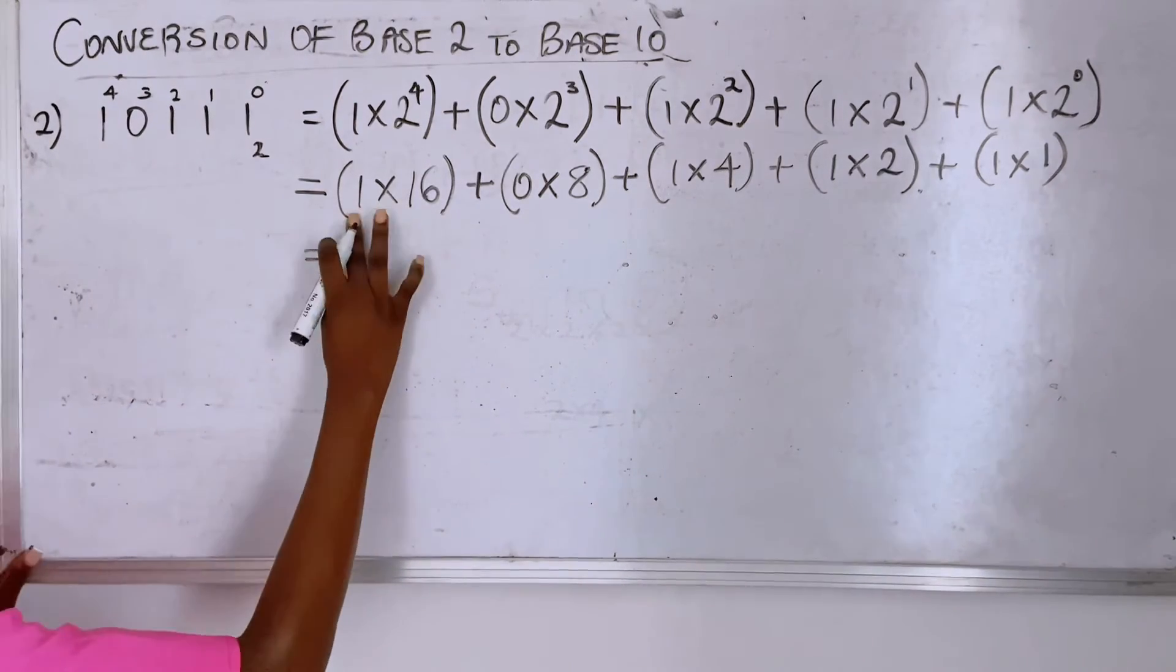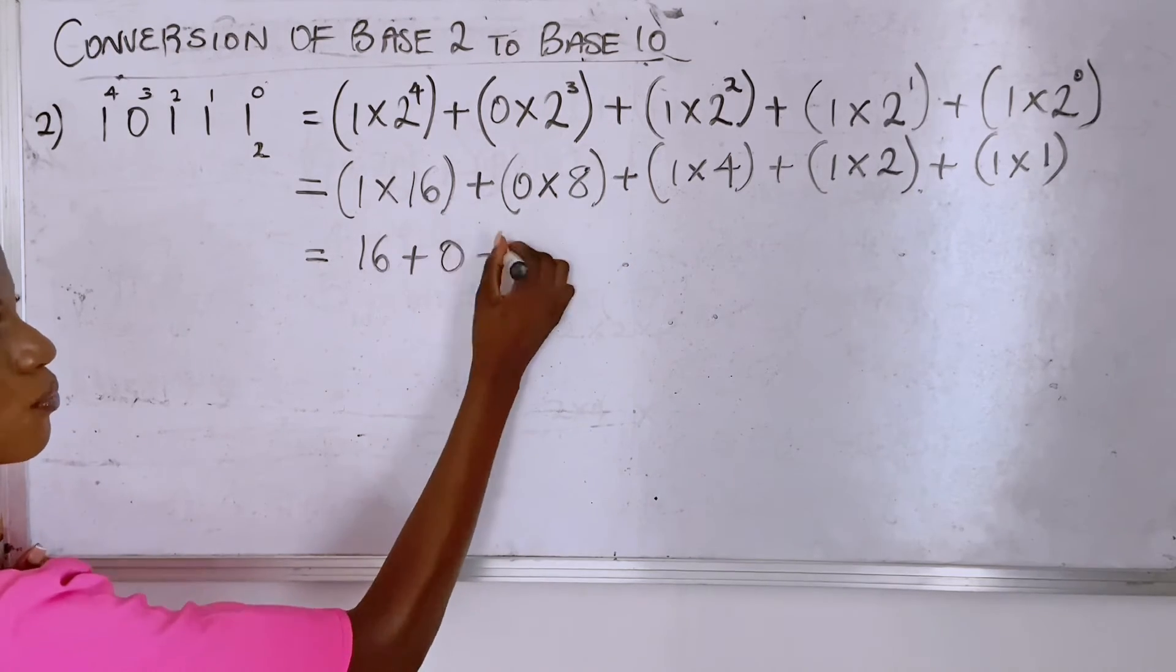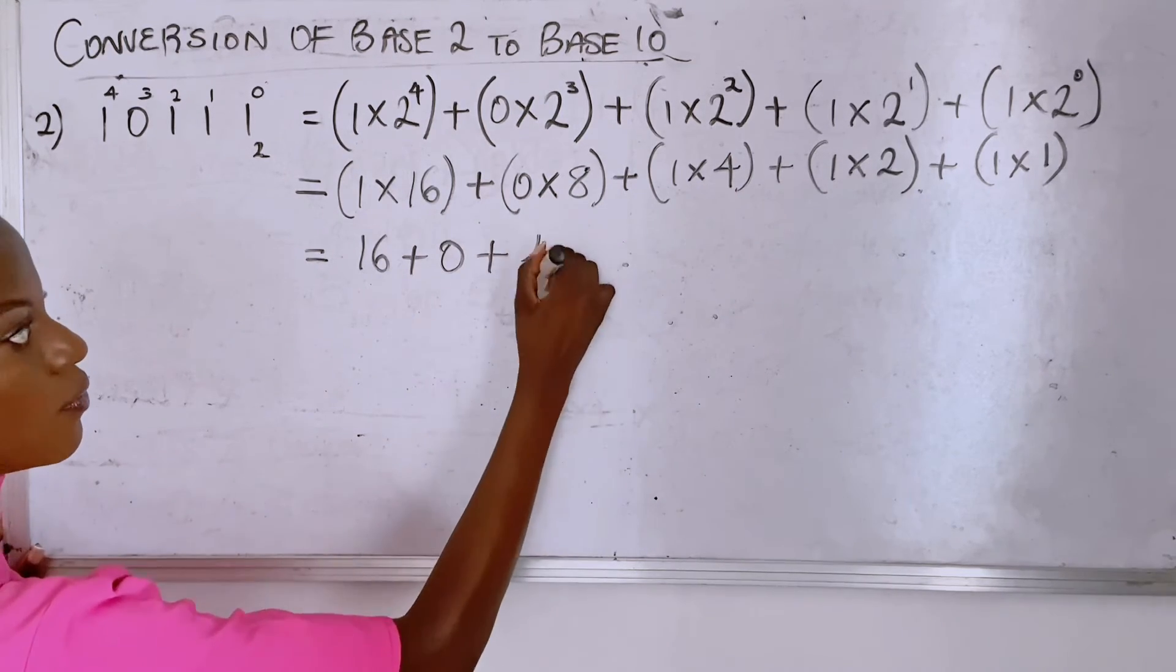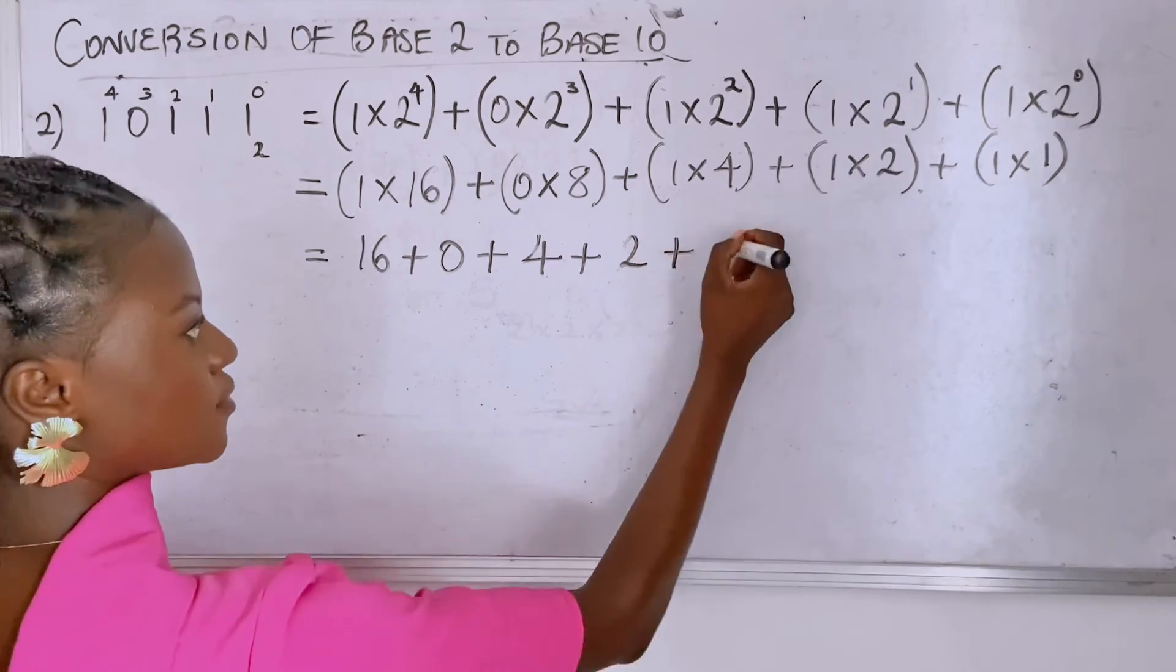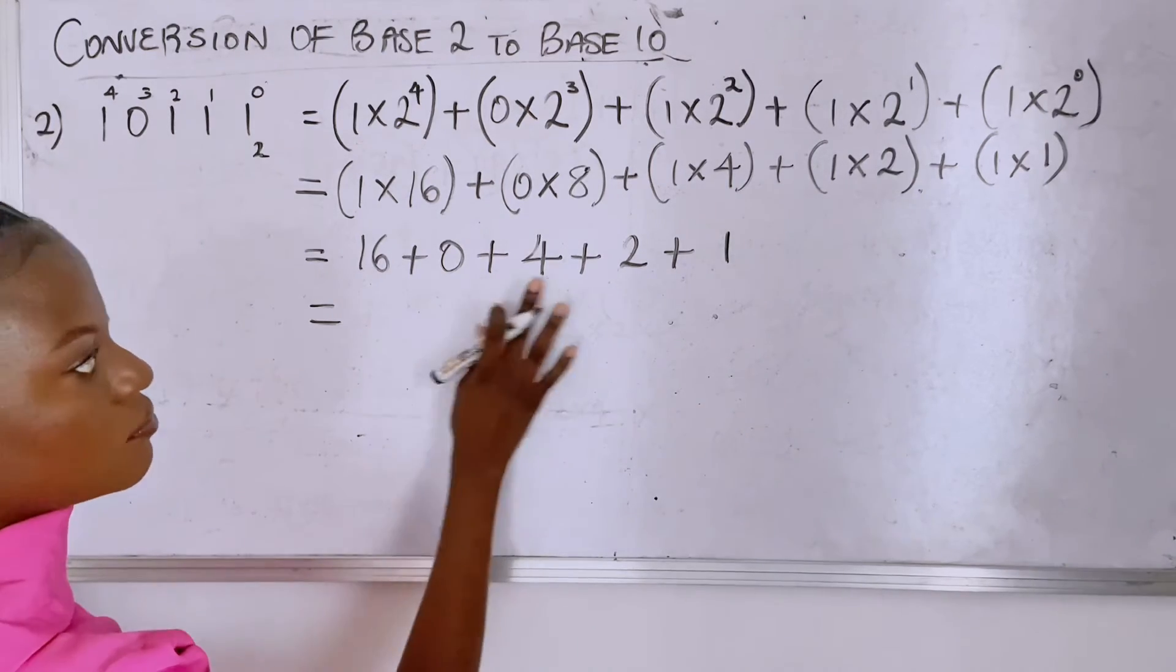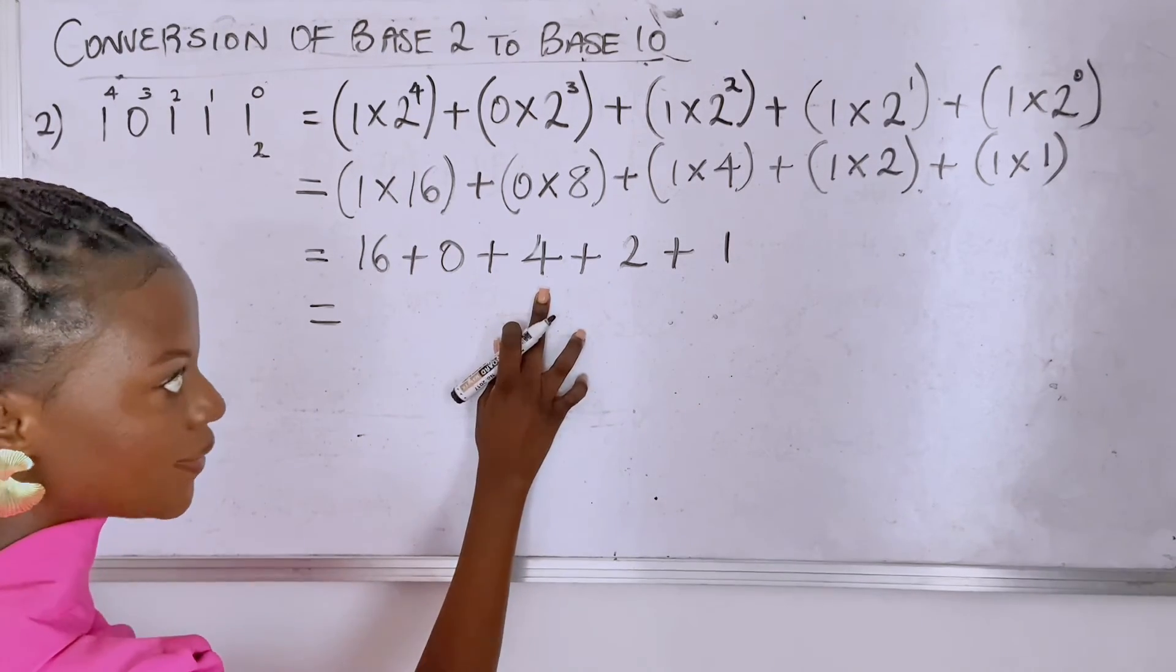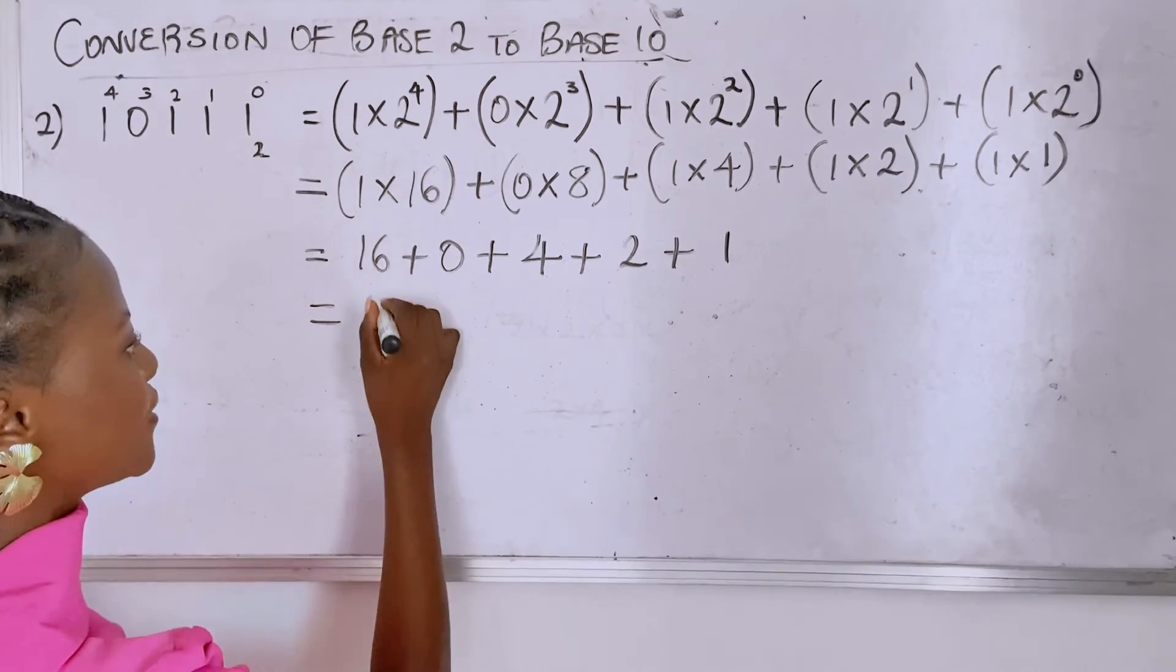So you have one times 16 is 16, zero times this is zero, one times four is four, one times two is two, and one times one is one. Good. So 16 plus zero is 16, 16 plus four is 20, 20 plus 2 is 22, and 22 plus one is 23.